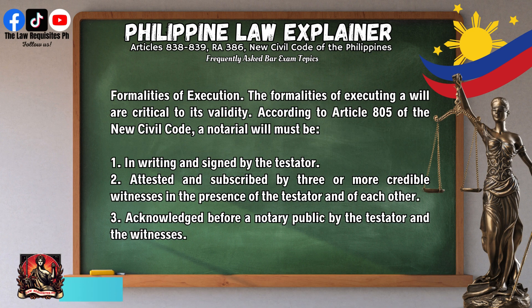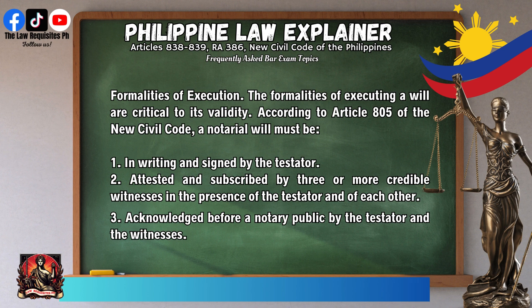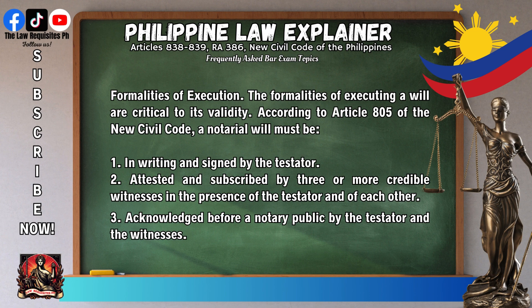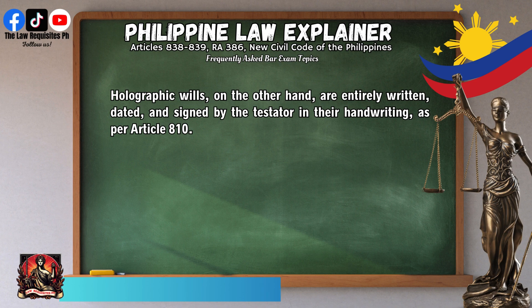The formalities of executing a will are critical to its validity. According to Article 805 of the New Civil Code, a notarial will must be: (1) in writing and signed by the testator; (2) attested and subscribed by three or more credible witnesses in the presence of the testator and of each other; (3) acknowledged before a notary public by the testator and the witnesses. Holographic wills, on the other hand, are entirely written, dated, and signed by the testator in their handwriting, as per Article 810.